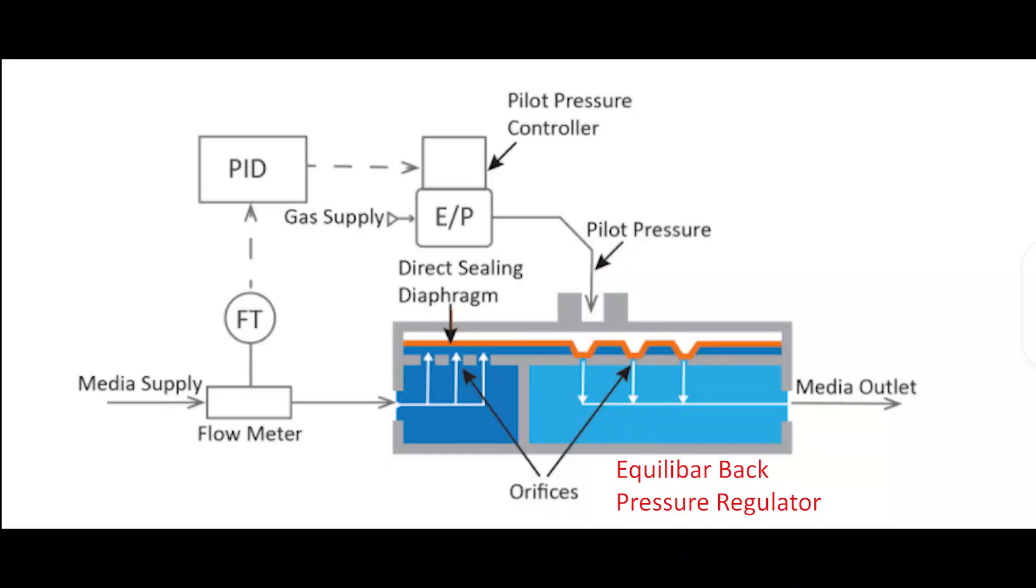The Equilibar back pressure regulator is used to control pressure upstream of the device by using a one-to-one pneumatically loaded set point on the dome of the regulator. A direct sealing diaphragm in the dome of the unit covers a field of orifices and adjusts its position to allow flow through the orifices to maintain a desired pressure set point.